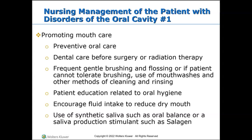We need to floss daily to remove plaque from areas that the toothbrush can't reach, using high-quality dental floss. We should encourage patients to eat a healthy diet rich in nutrients like vitamin A and vitamin C to help prevent gum disease. Educate patients to avoid smoking cigarettes and any other form of tobacco, which can contribute to oral cancer as well as gum disease. Encourage patients to visit a reputable dentist for regular exams and cleanings at least twice annually, and get dental care before surgery or radiation therapy, as these can cause deterioration to the gum.